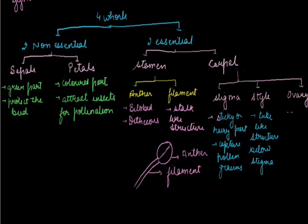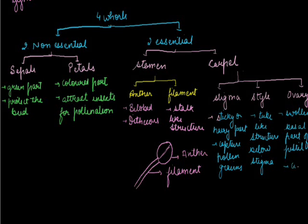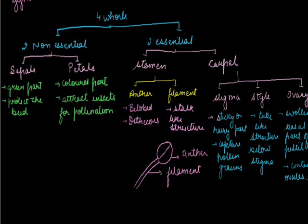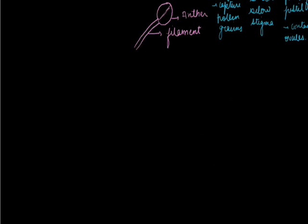Next we are dealing with the ovary, which is the swollen basal part of the carpel. Now we are dealing with the structure of the anther. First, the stamen is also known as microsporophyll. Stamen is a structural and functional part of the androecium; the fertile portion of the stamen is the anther.